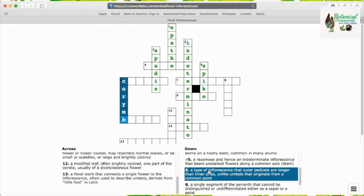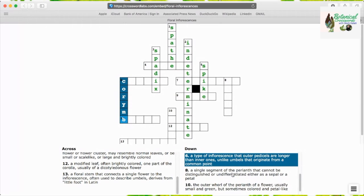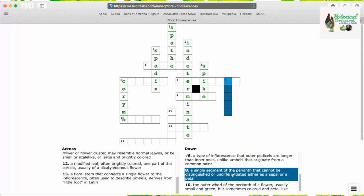Corymb is the next answer, a type of inflorescence where outer pedicels are no longer than inner ones, unlike umbels that originate from a common point.